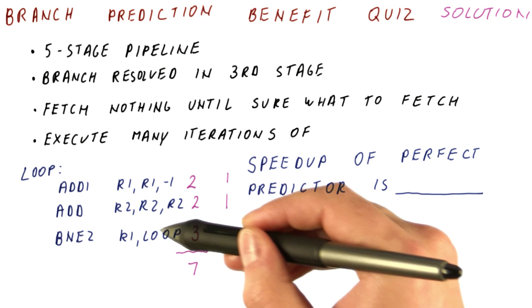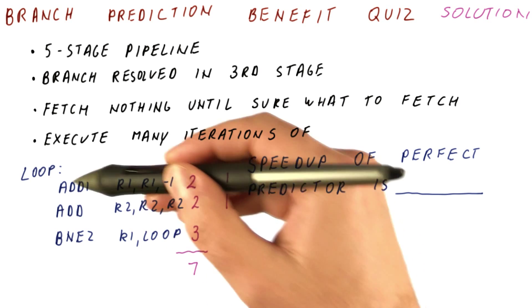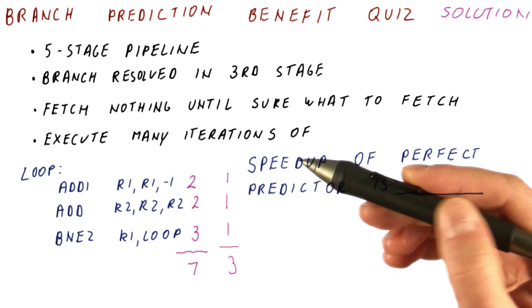And with the perfect predictor, once we have fetched this branch, we magically know that we should be fetching this adi. So we spend one cycle here for a total of three cycles.